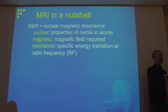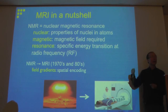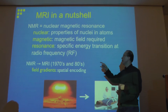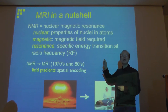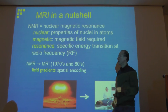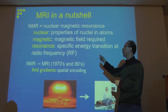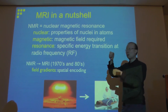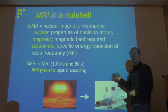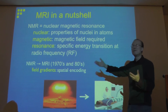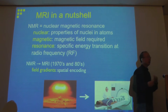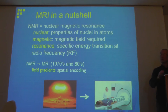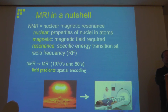MRI essentially uses nuclear magnetic resonance, but only in the 1970s and 80s did it transform into MRI, where the 'I' stands for imaging. We dropped the 'N' because 'nuclear' is associated with nuclear bombs and people don't have a good impression of it, so now it's MRI or just MR.